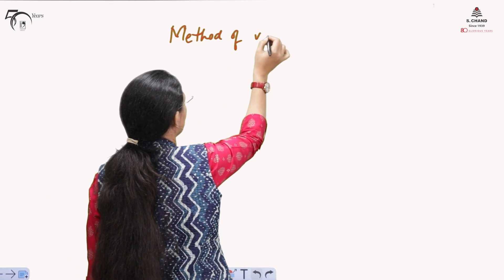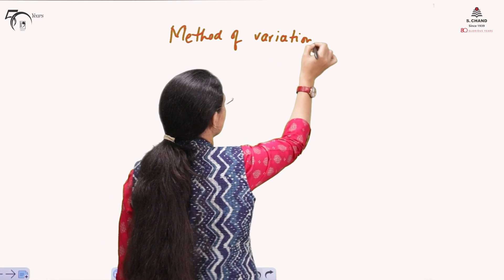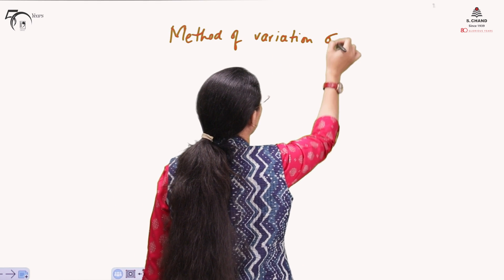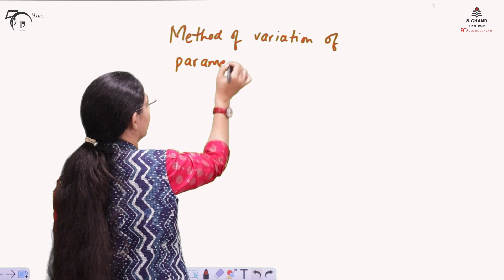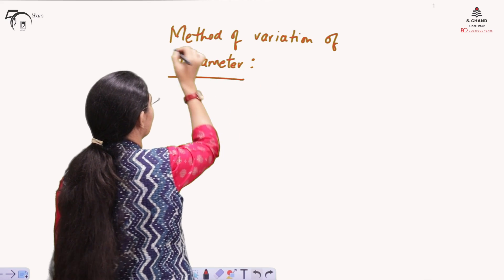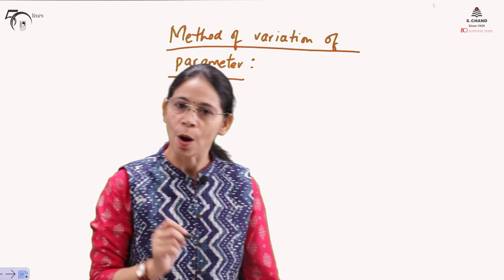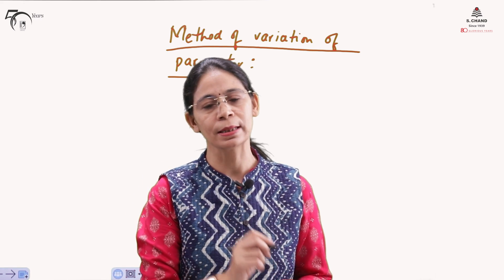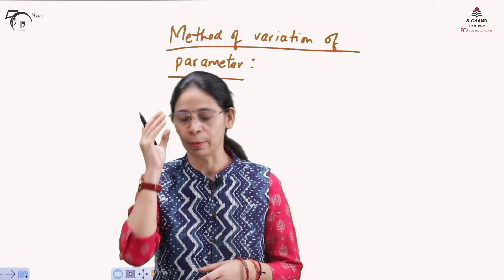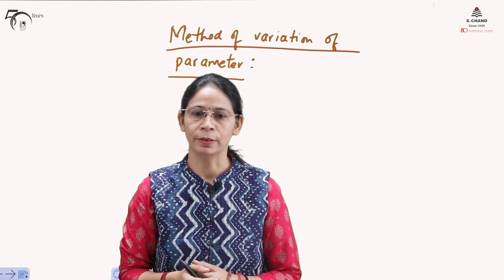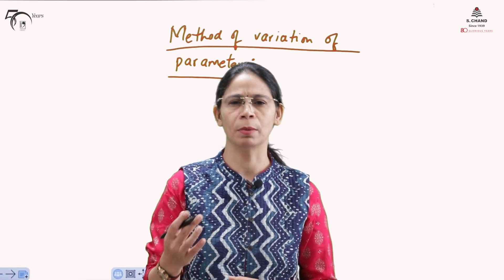The method of variation of parameters is a method to find out the particular integral of a linear differential equation. There is no restriction on the coefficients — they may be constant or variable. So this method is applicable to all such linear differential equations.